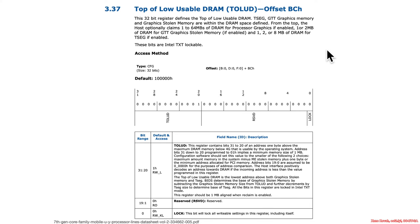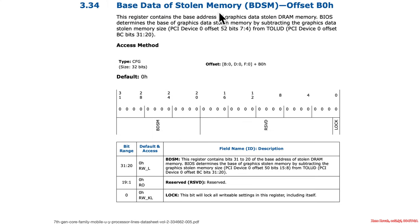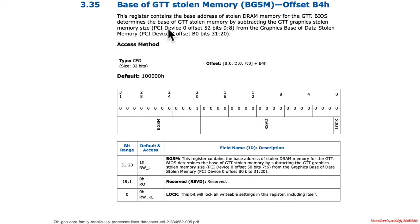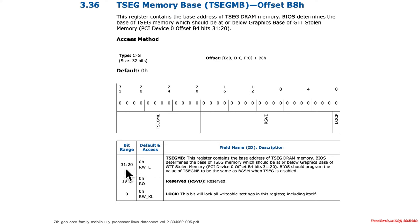Next is the base of data stolen memory — the graphics data stolen DRAM — which also uses bits 20 to 31 and has a lock bit. Then there's GTT stolen memory, which stands for graphics translation table, again with bits 20 to 31 and a lock bit. And finally TSEG, also bits 20 to 31 with a lock bit.